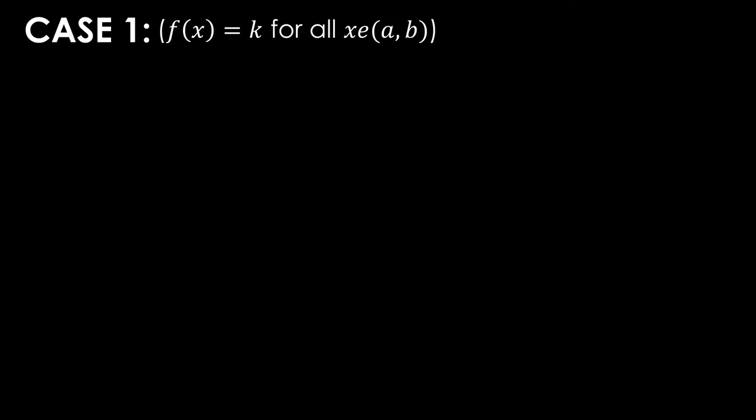Case one is our easiest case to tackle. Since f(x) is equal to k for all x in a to b, then the derivative of any point x must be equal to zero for all x in a to b. This should be plainly obvious and we do not need to do any further explanation.